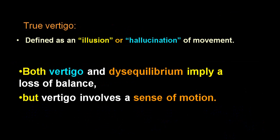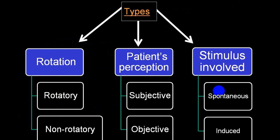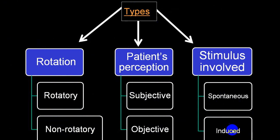True vertigo is defined as an illusion or hallucination of movement. Both vertigo and disequilibrium involve loss of balance, but pure vertigo involves a sense of motion. Vertigo is divided into central variety — due to damage to the brainstem or cerebellum — and peripheral variety — due to damage to the labyrinth or vestibular apparatus. It is further divided into subjective and objective variety. Vertigo can be spontaneous or induced by movements; if induced by a particular posture, it is more in favor of BPPV.